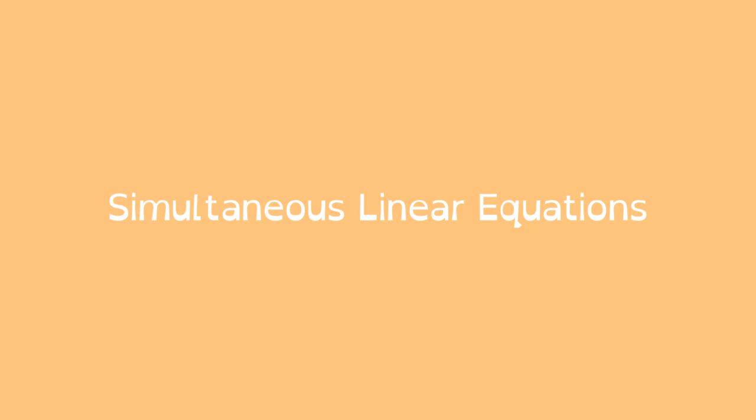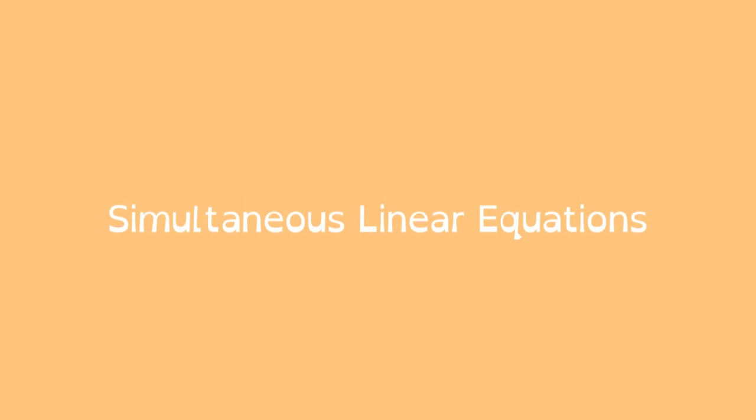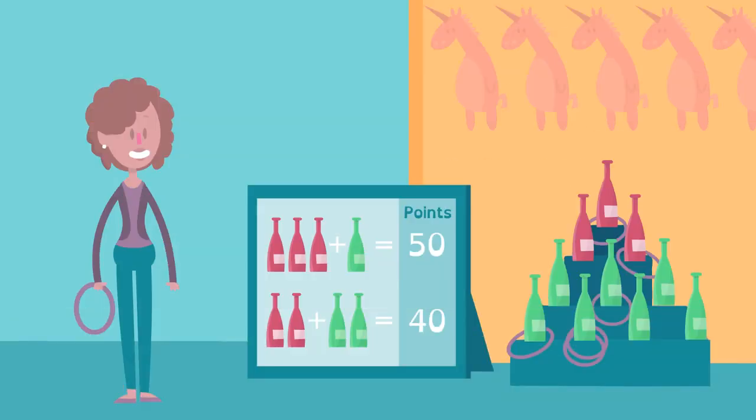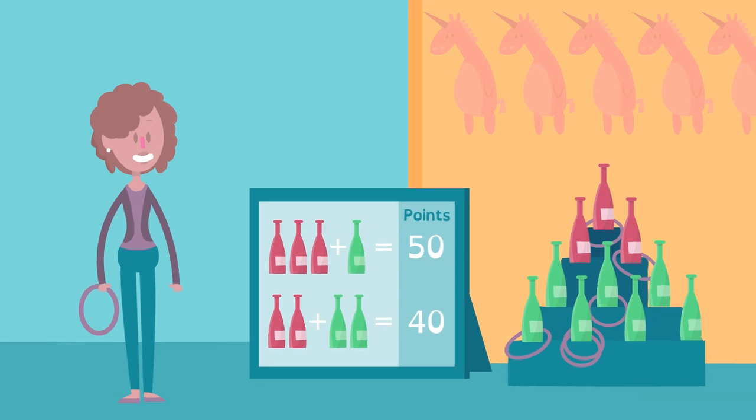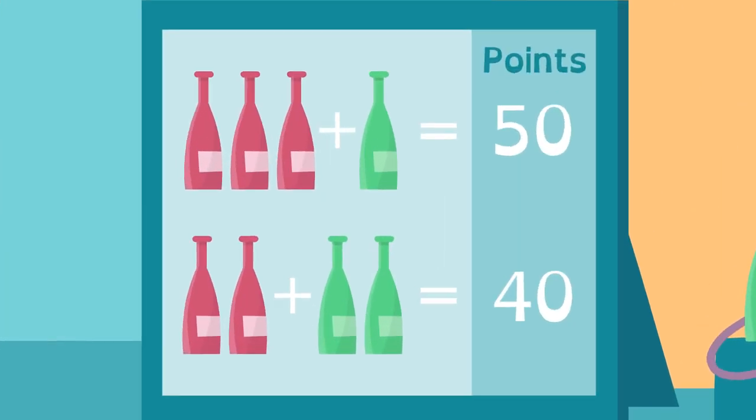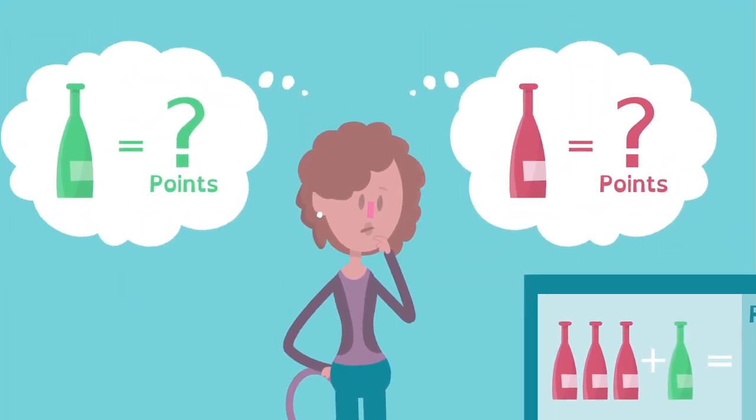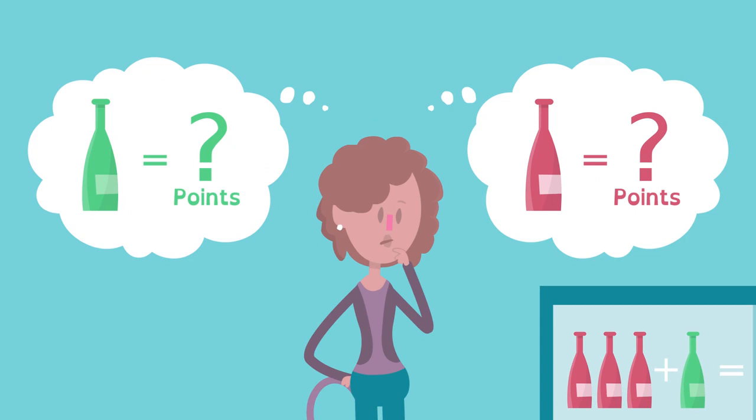Here's how simultaneous linear equations work. Kate can win points by tossing rings around these bottles. Different color combinations are worth different points. Kate wants to know how much each bottle is worth on its own.